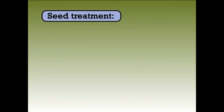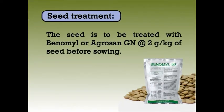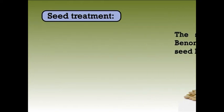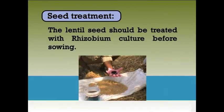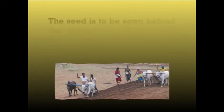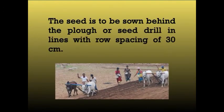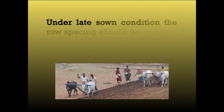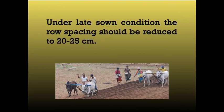For seed treatment, the seed is to be treated with benomyl or agrosan GN at the rate of 2 g per kg of seed before sowing. The seed should also be treated with Rhizobium culture before sowing. The seed is to be sown behind the plough or seed drill in line with row spacing of 30 cm. Under late sowing conditions, the row spacing should be reduced to 20 to 25 cm.